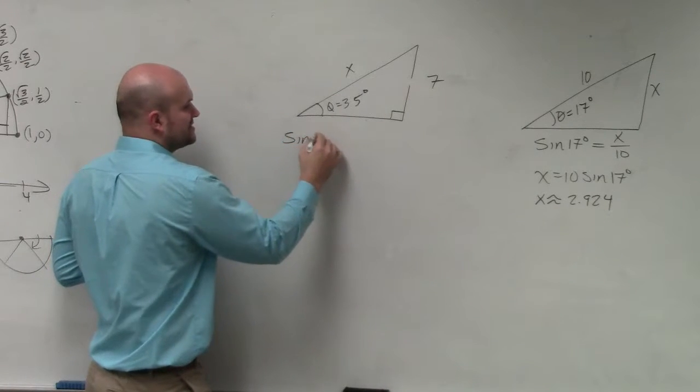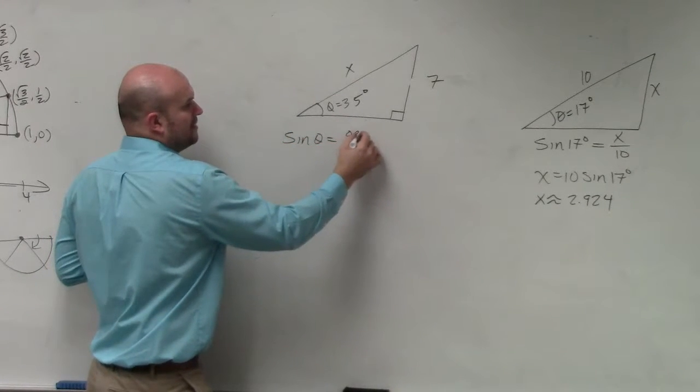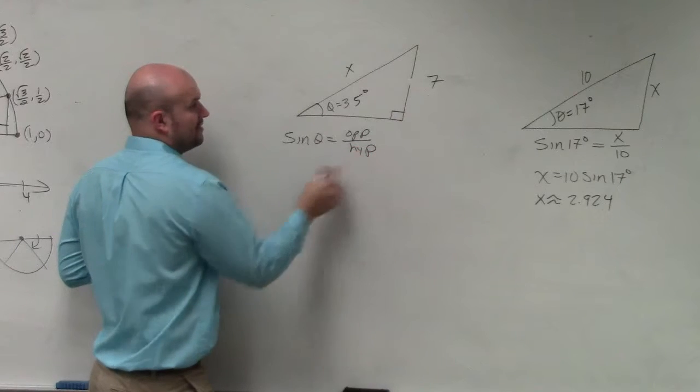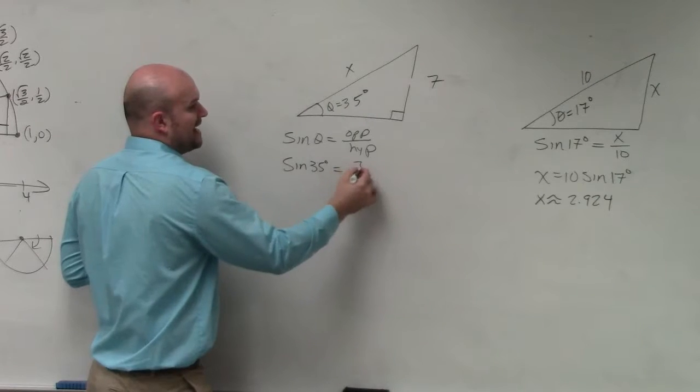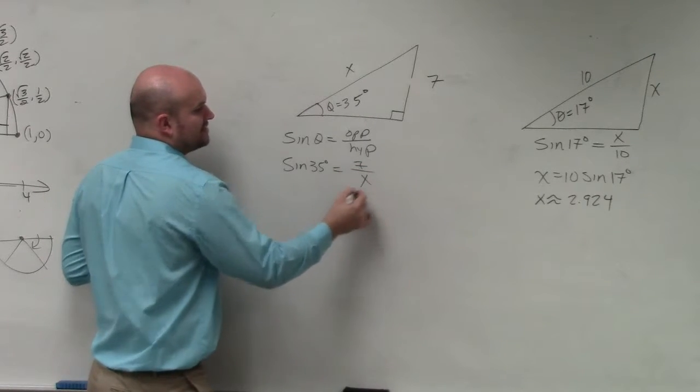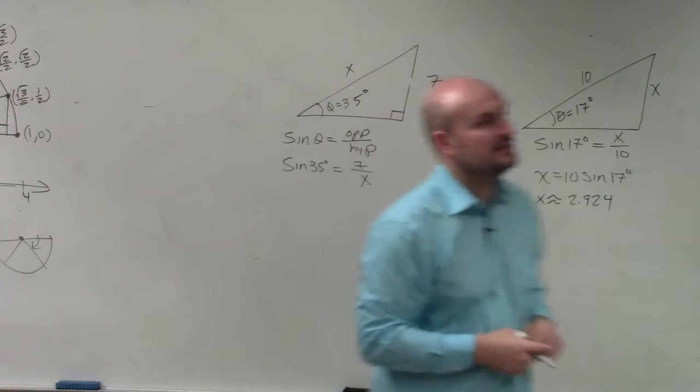The sine of an angle is equal to opposite over hypotenuse. I have my angle, which is 35 degrees. I have my opposite side, and I need to solve for my hypotenuse.